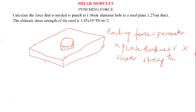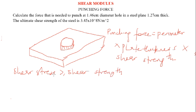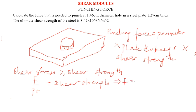The reason for this formula is that for punching to occur, the shear stress must be greater than or equal to the shear strength. The shear stress equals force divided by area, where the area is the perimeter multiplied by the thickness. Setting this equal to the shear strength, it implies that the punching force equals the perimeter times the thickness times the shear strength.